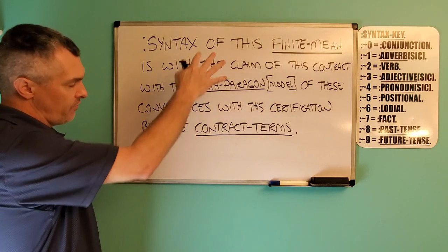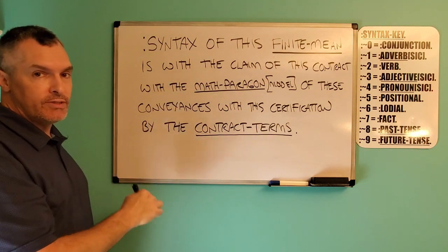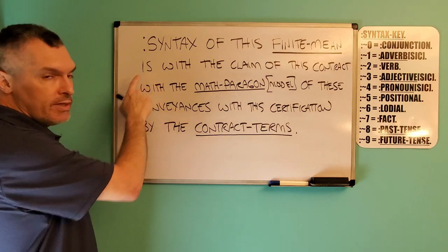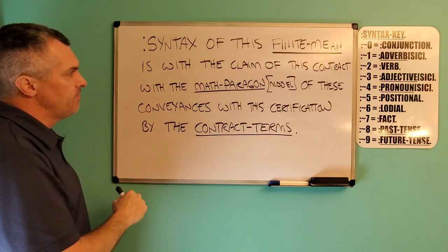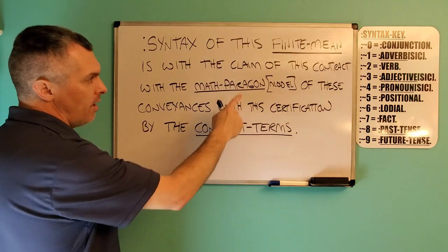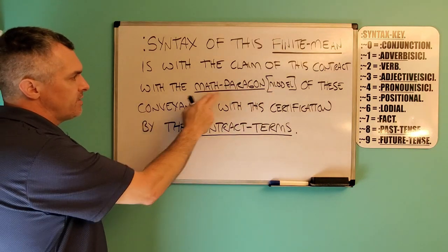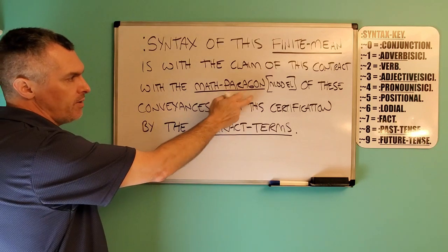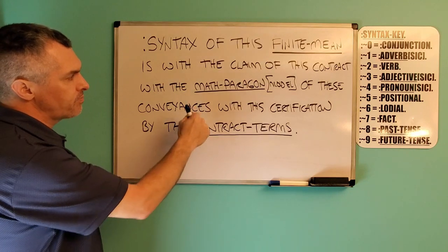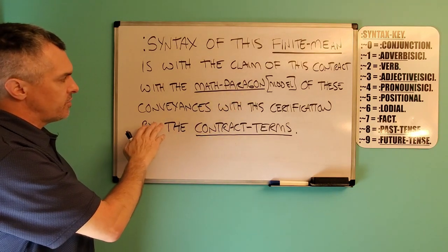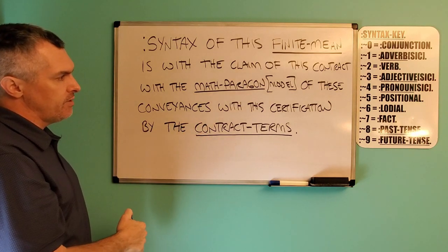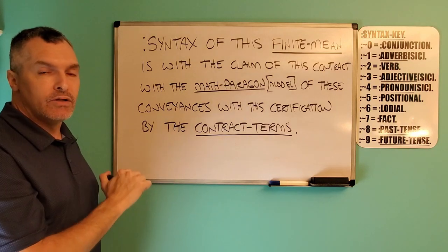What is the cause concerned with? This finite mean. We have our two points — we can draw a straight line. Cause, concern. Now we drop our verb of the thinking in, singular, because the cause is singular. We have the possessive — with the claim. What is the claim concerned with? Of this contract. The other possessive: the math paragon. I use this word paragon because model is no contract — MO is movement, it's no contract. So math paragon is concerned with the conveyances. Possessing what? This certification. And the authority of the certification is by the contract terms.